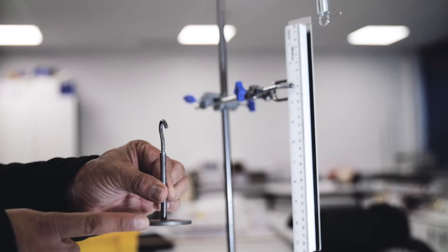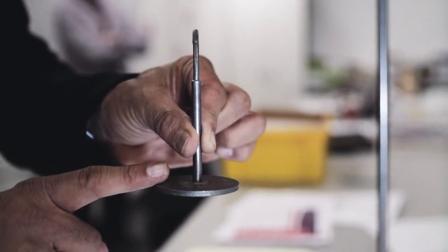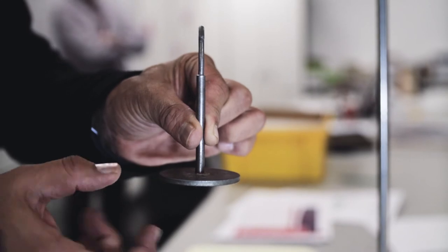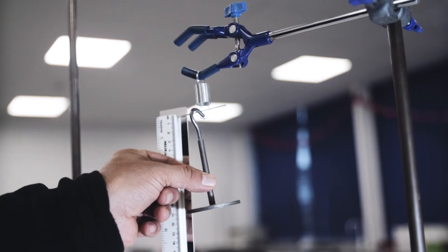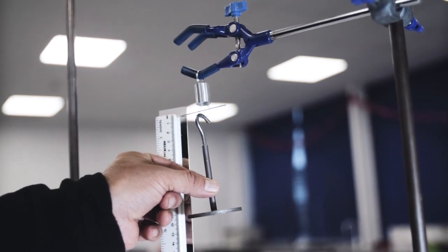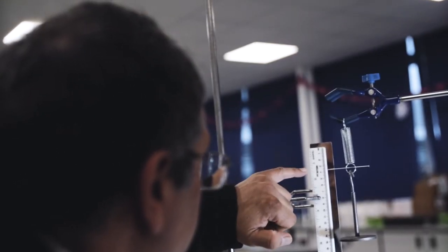attach a 100 gram mass to the end of the spring. A 100 gram mass is equivalent to a force of 1 Newton. Attach the mass to the end of the spring, and you'll notice that the pointer will come down. And once again, line up your head,